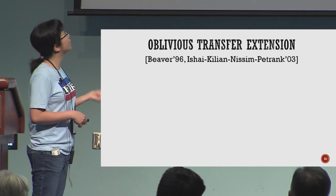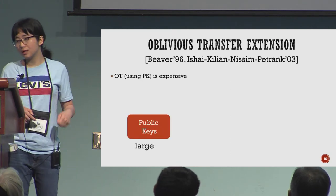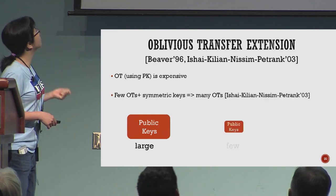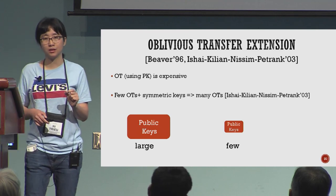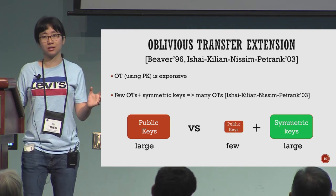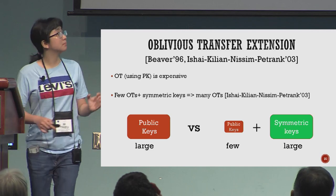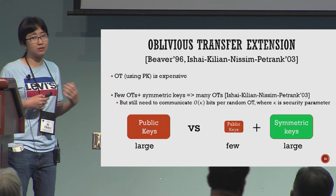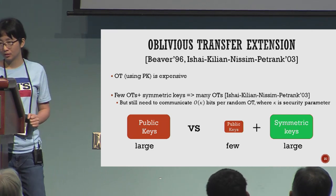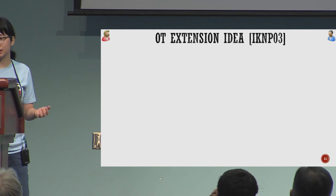Before that, I want to tell you about OT extensions, first proposed by Beaver two decades ago. OT is very expensive if using public keys, but now you can have a small number of public key OTs and then extend them to get many OTs as you want using symmetric keys. This is very efficient in terms of computation, but you still need to pay 128 bits per each OT.